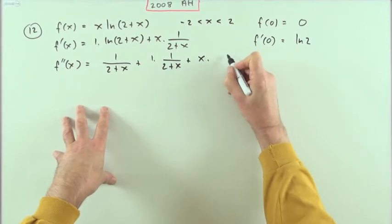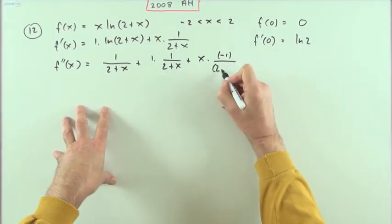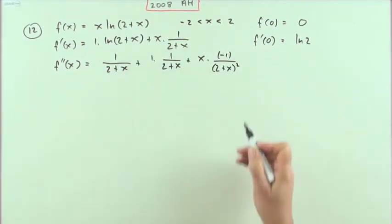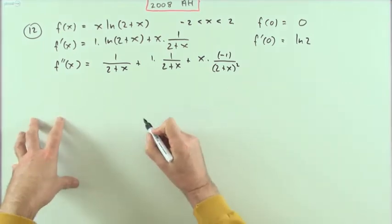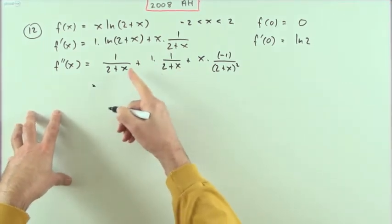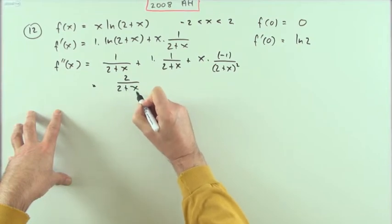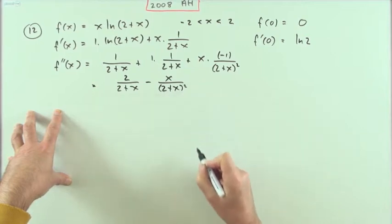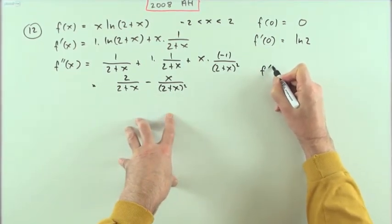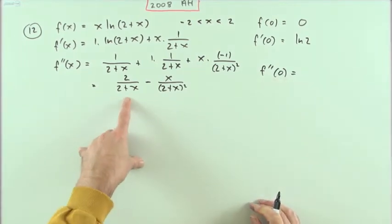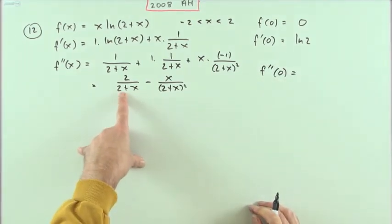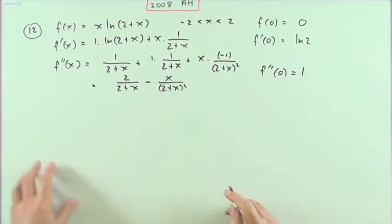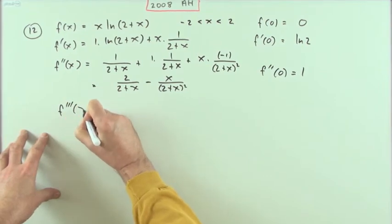The derivative of 1/(2+x) is negative 1 over (2+x)², so tidying up I've got 2/(2+x) minus x/(2+x)². What's the second derivative at zero? When x is zero I've got 2/2 which is 1, minus zero, so it equals 1. Now I have to differentiate again — and this is all for very few marks compared to earlier parts of the paper.